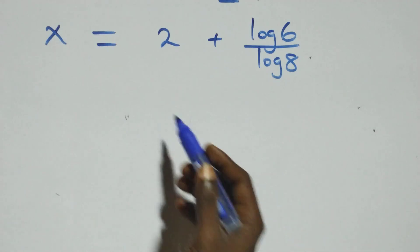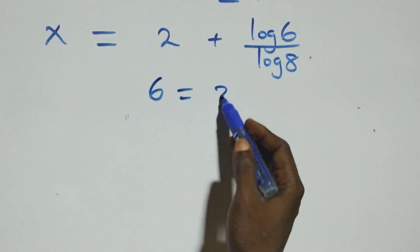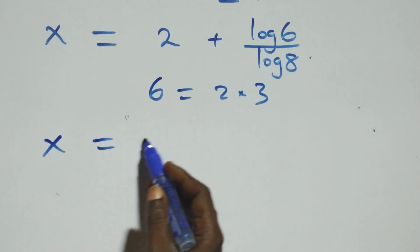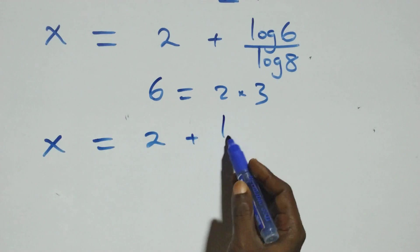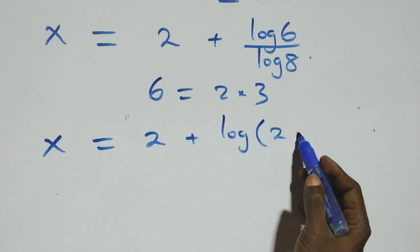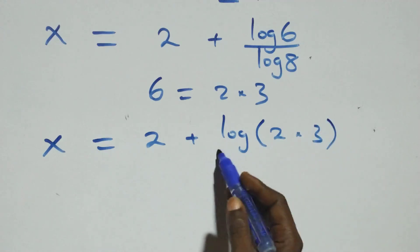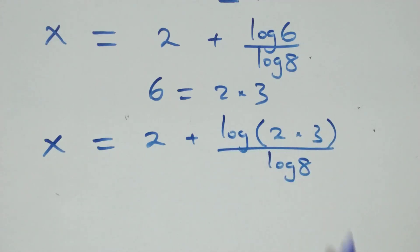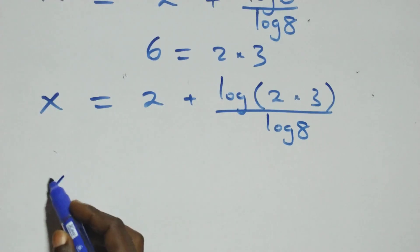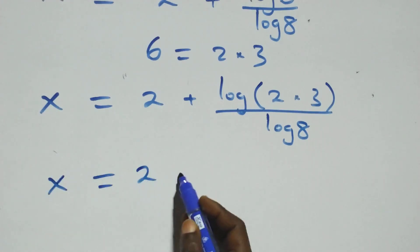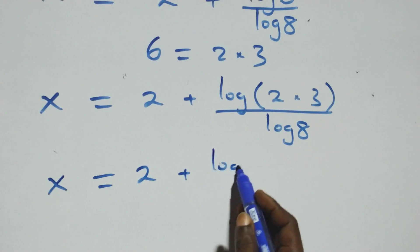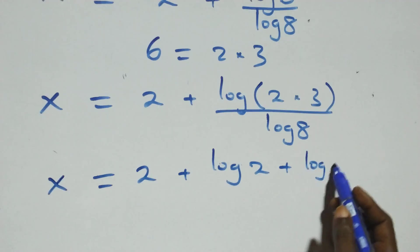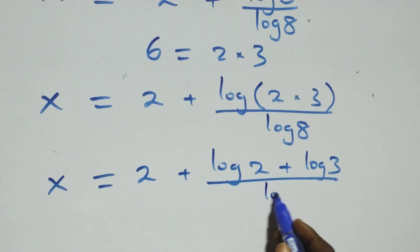Next step: we can write 6 as 2 times 3, so what we have becomes x equals 2 plus log of 2 times 3, over log 8. This follows the law of logarithms, and we expand to x equals 2 plus log 2 plus log 3, over log 8.